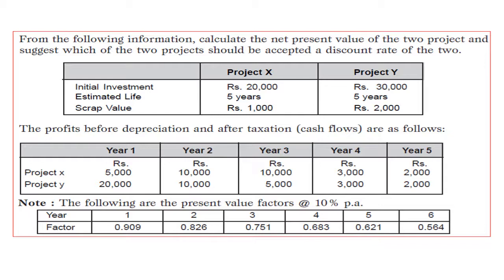The profit before depreciation and after tax is directly the cash inflow. In this question, cash inflows are directly given. For project X: Year 1 — 5,000; Year 2 — 10,000; Year 3 — 10,000; Year 4 — 3,000; Year 5 — 2,000. Similarly, two project cash inflows have been provided.